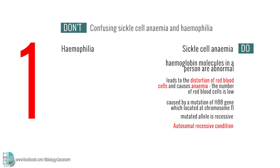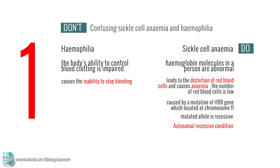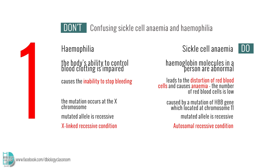Hemophilia is a disorder where the body's ability to control blood clotting is impaired. This causes the inability to stop bleeding. The mutation occurs at the X chromosome, and the mutated allele is recessive, so this is an X-linked recessive condition.